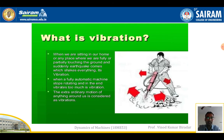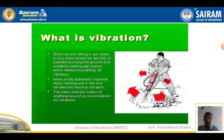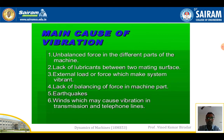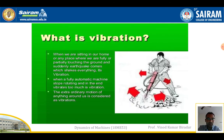Vibration is nothing but the to-and-fro motion of any component. For example, when we are sitting at home and an earthquake comes which shakes everything — that is also one type of vibration. When a fully automatic machine stops rotating and vibrates too much, that is also called vibration. So vibration is the to-and-fro motion of a body from its mean equilibrium position.